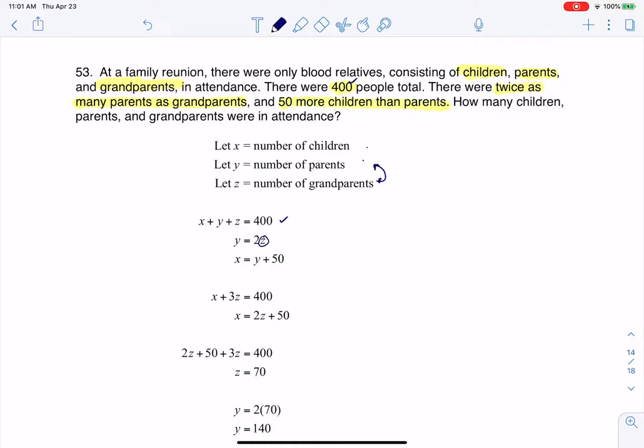So if I have z grandparents and I double it, I get up to parents. That's where my second equation is coming from.